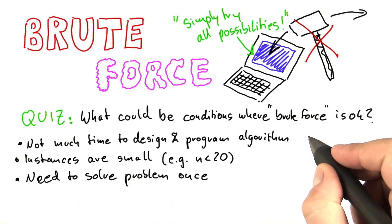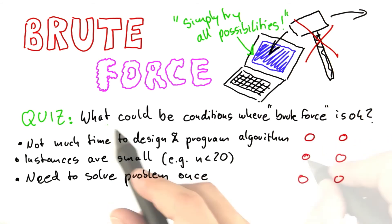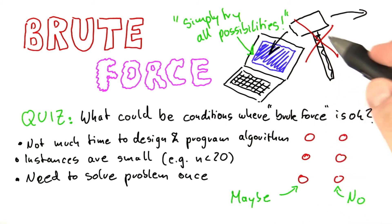So for each one, I'm going to give you two choices whether under these conditions using brute force could be okay. And the first one is a maybe and the second one is a definitive no. I'm not going to give you a clear yes choice because obviously since we're dealing with NP-complete problems here, brute force is never generally advisable of course.